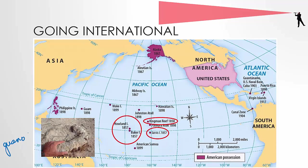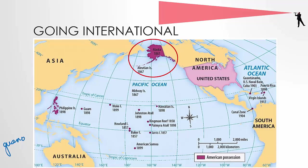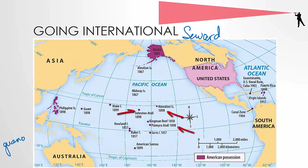The next major territorial acquisition by the United States is Alaska in 1867. Secretary of State William Seward negotiated the purchase of Alaska from the Russian Tsar. As a Russian colony, Alaska was costing way more money than it made.